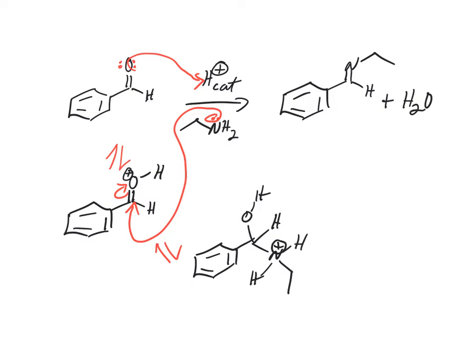So what else do we need to do here? We need to get rid of the OH, right? So we need to make that a better leaving group. We need to do a proton transfer — just note PT. You don't have to show the arrows for this, but if you do, make sure you do it right. It's still a tetrahedral intermediate. Now we've got a good leaving group.